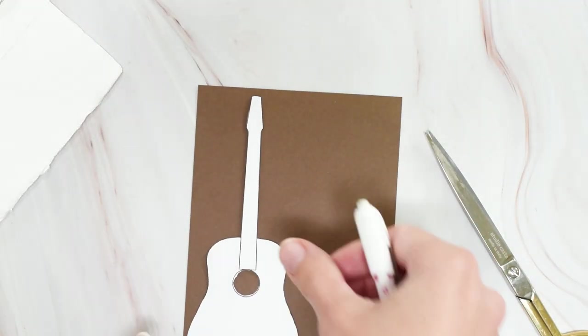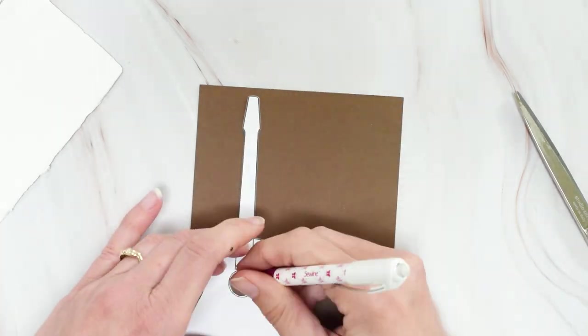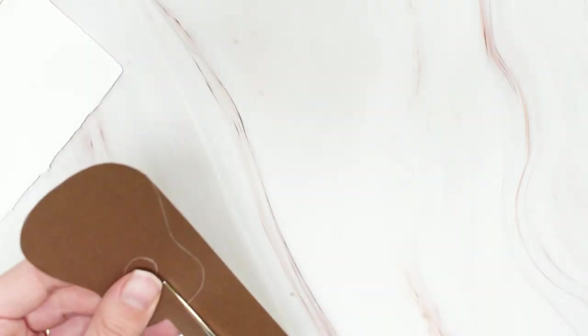Now use a white pencil to trace around that template on a brown piece of cardstock. Then use a sharp pair of scissors to cut out the guitar.